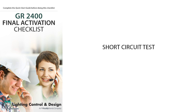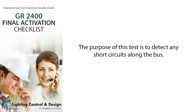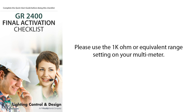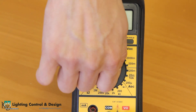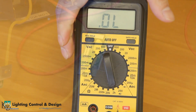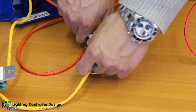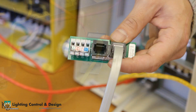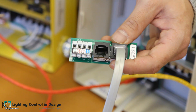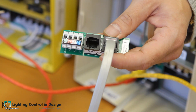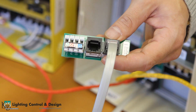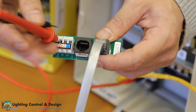The second test will be the short circuit test. The purpose of this test is to detect any short circuits along the bus. Please use the 1k ohm or equivalent range setting on your multimeter. First, remove the data power jumper from the last device. Then go back to the bus checker card and measure resistance across all combinations of inputs — measure from ground to A,